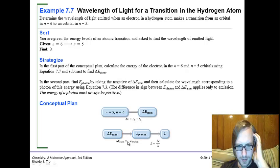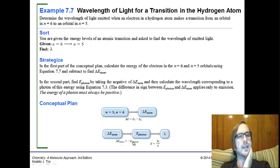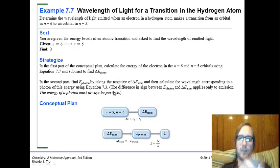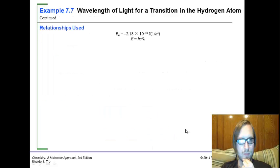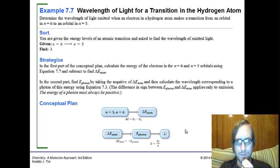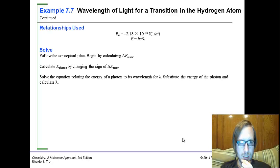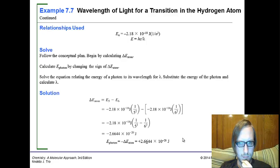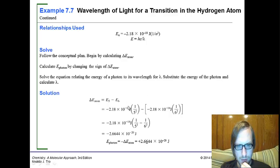We're going to find the energy in 5 and subtract the energy in 6. After that, the change in energy of the atom is the negative energy of the photon. The difference between E photon and change E atom applies only to emission. If we're talking about absorption, it would be the opposite because we're giving off energy. We calculate the change in energy of the atom. We do the formula for 5 and for 6. Really, the easiest way to do that would be just to factor it out. And there's our answer.